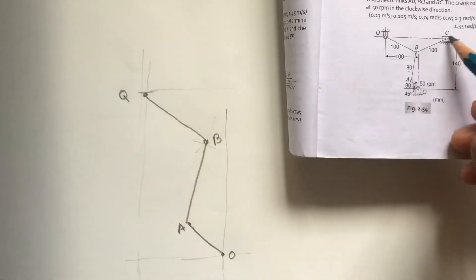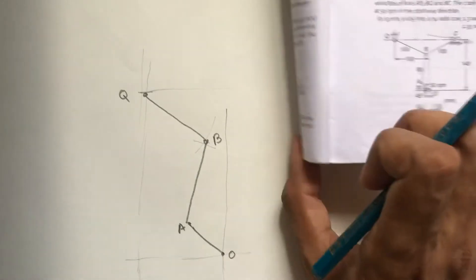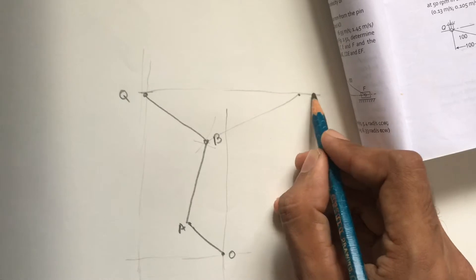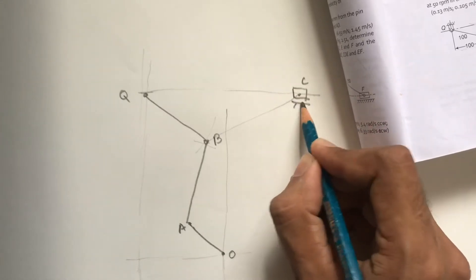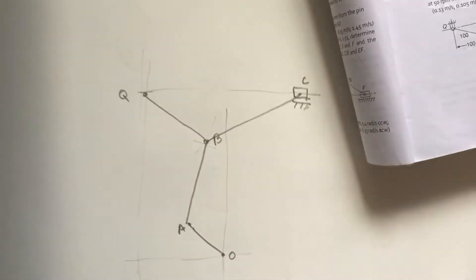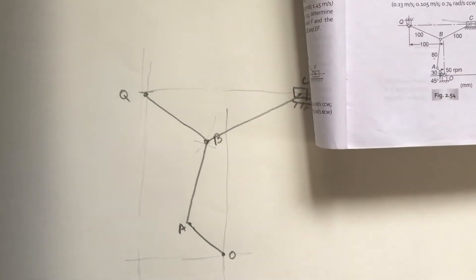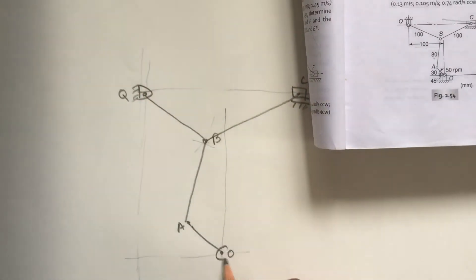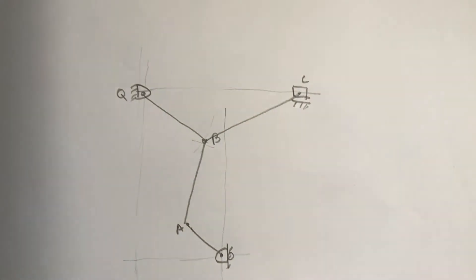From B to C is 100 mm in the horizontal line only — C is available on the horizontal line. Draw a 100 mm arc from B, so that is point C, which is the slider. Dimensions given are 100, 180, and 30 for all four links. Both fixed points are pin jointed.